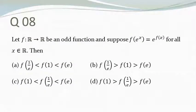Take a moment to read the question. So f is a function which satisfies the condition that f(e^x) = e^(f(x)). The domain and codomain of f is the set of real numbers. We have to find out which among the given options is true.